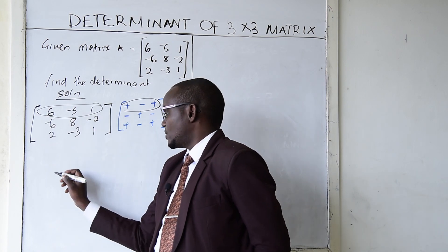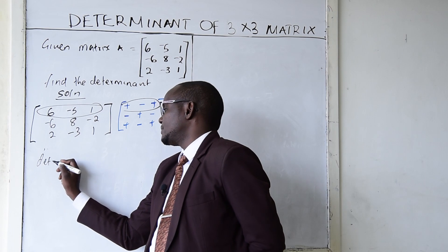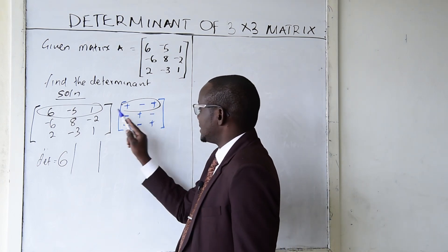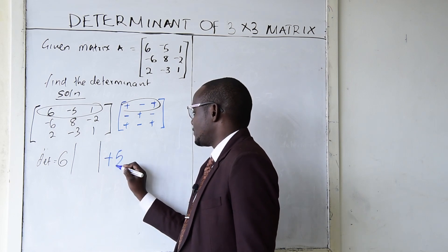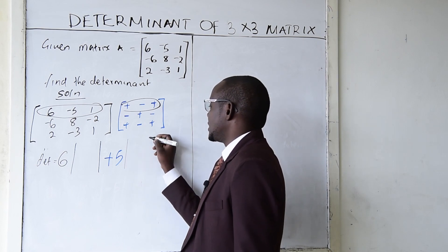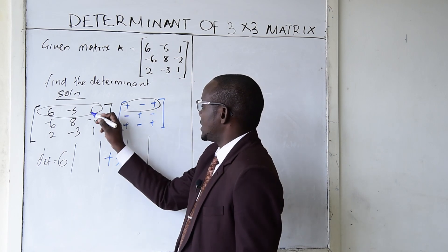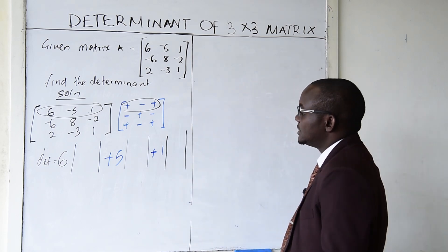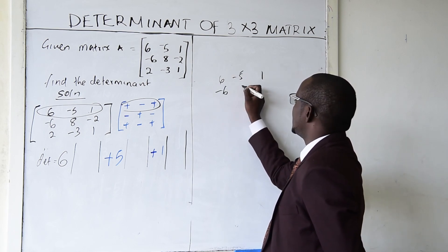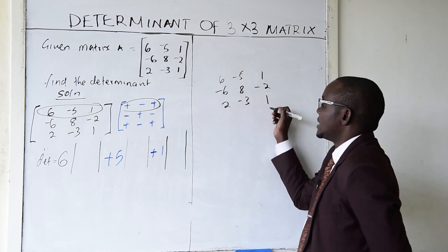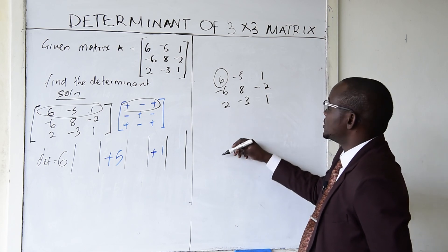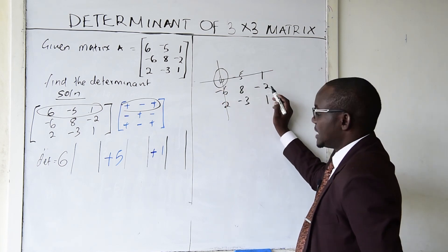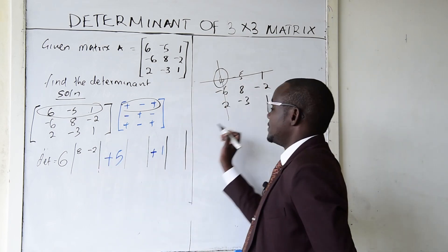Using row 1: element 6 has a positive sign, element −5 has a minus sign making it +5, and element 1 has a positive sign. For the submatrix of 6, I cancel its row and column and remain with 8, −2 / −3, 1.